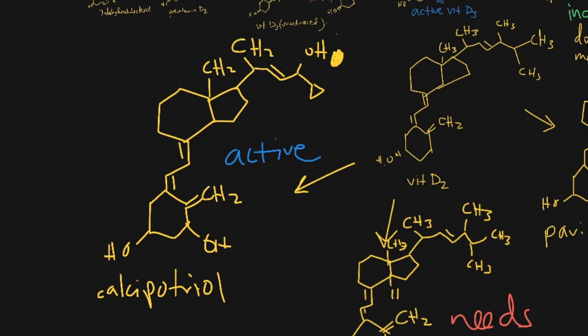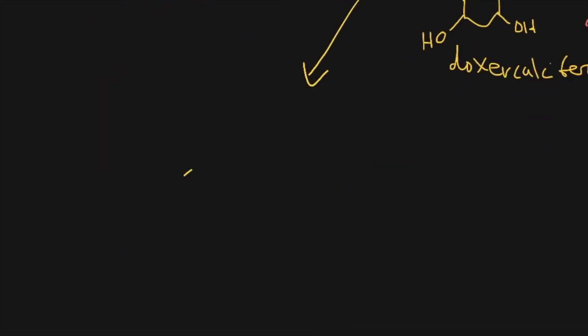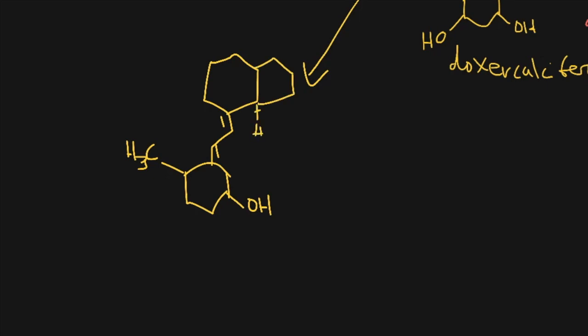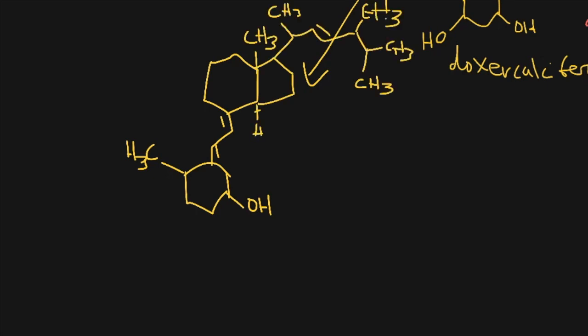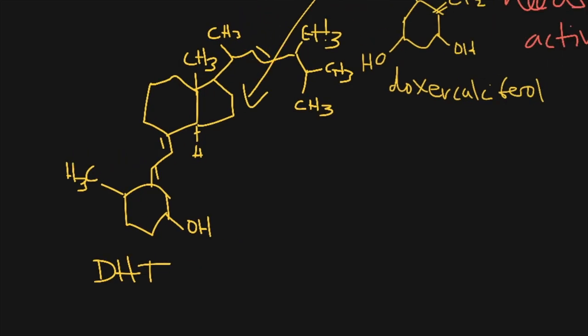The last analog is dihydrotachysterol. Why is it a vitamin D2 analog? It has a double bond and a methyl group — but again, just look for the double bond. Is it active? It's not active because while it has the 1-hydroxyl, it's missing the 25-hydroxyl. So this is not active and needs activation. Remember: an active molecule needs both the 1-hydroxyl and the 25-hydroxyl, or the 25 position can be a cyclopropyl ring.